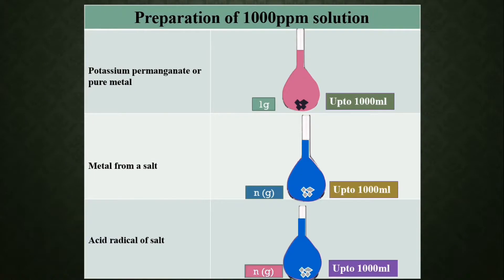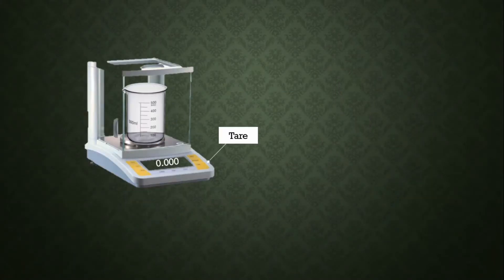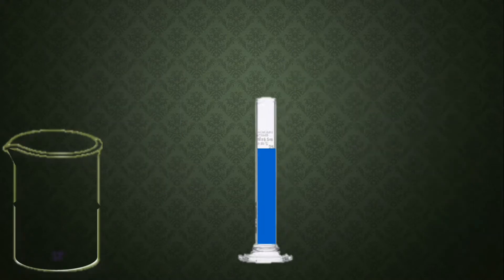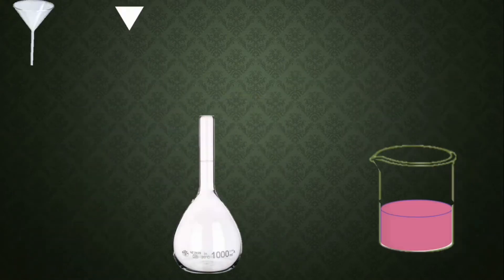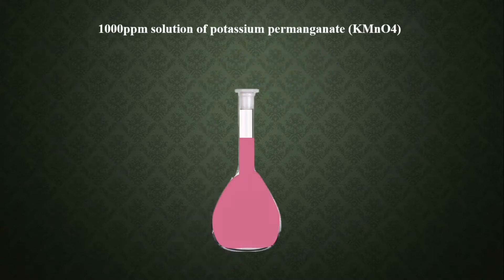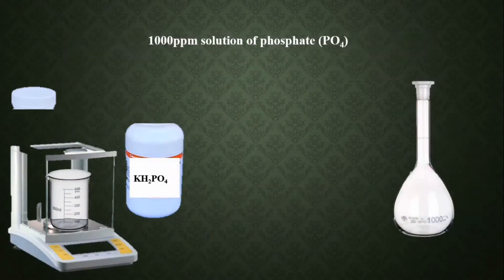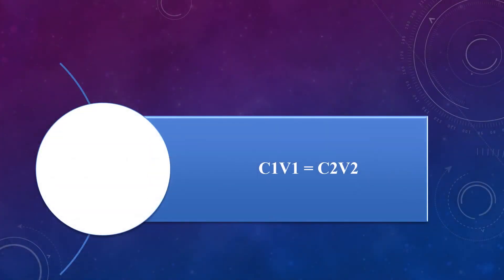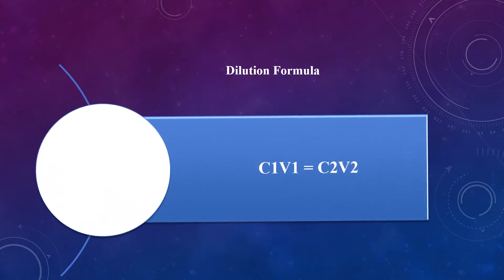To dilute a ppm solution, or a solution of any other concentration — like molarity, normality, percentage solution, or any other solution — we have to use the dilution formula. The dilution formula states that the stock solution equals the required solution.